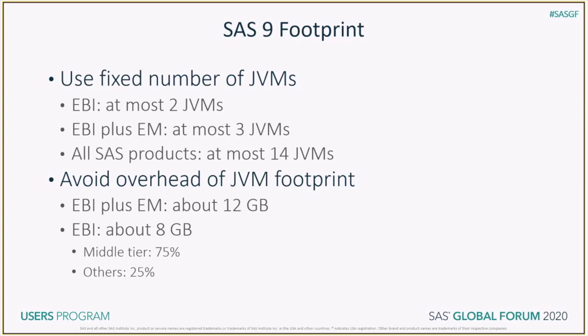SAS 9 is a traditional multi-tier web application. For the middle tier, all SAS products are deployed into a fixed number of web application servers, or a fixed number of Java Virtual Machines — JVMs. For example, if you deploy SAS Enterprise Business Intelligence, or EBI only, your applications will be deployed into at most two JVMs. If you deploy SAS EBI plus SAS Enterprise Miner, your applications will be deployed into at most three JVMs. If you deploy all SAS products, they will be deployed into 14 JVMs. By doing this, we avoid overhead of JVM footprint. We are able to run EBI plus EM in about 12 GB, and we are able to run EBI in about 8 GB.